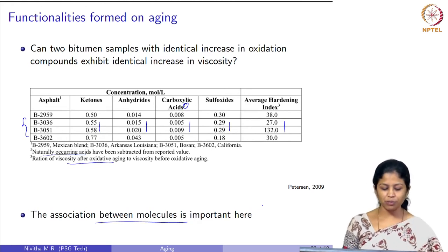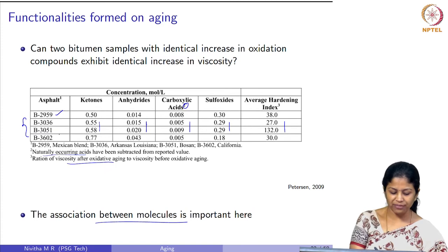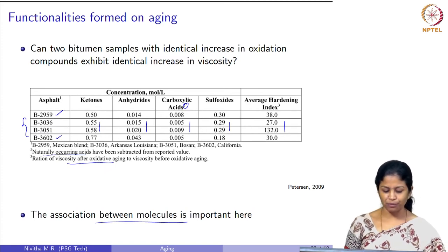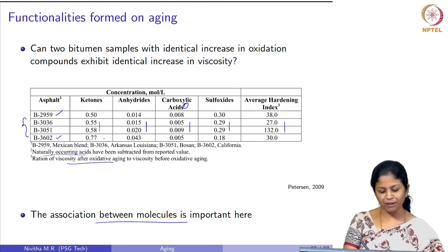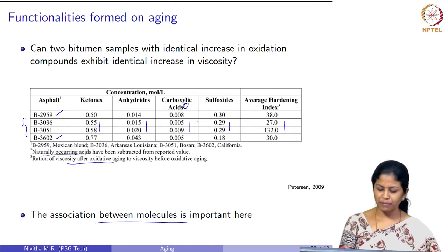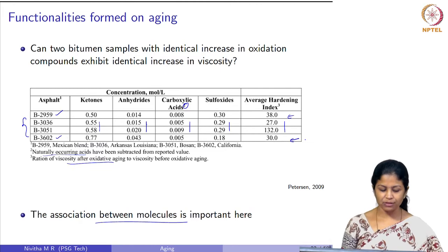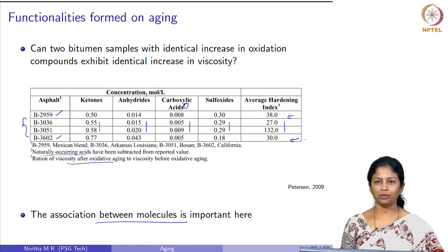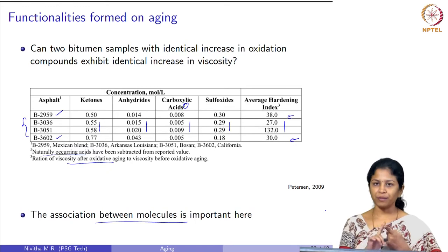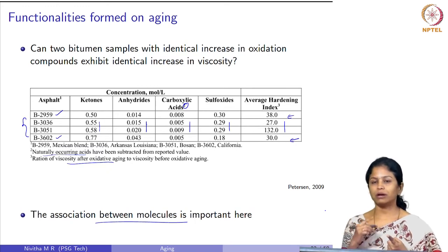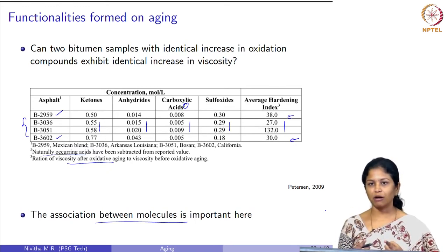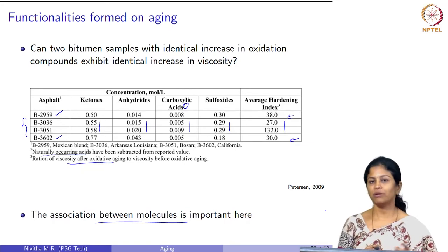Looking at the other two bitumens, B2959 and B3602, the ketones are relatively larger, anhydrides are also different, and sulfoxides are also higher, but the hardening index is 38 for B2959 and 30 for B3602. This shows that both the formation of oxygen-containing compounds and their association are important in determining the viscosity increase.